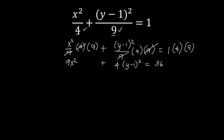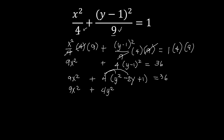Now expand the binomial squared using the special product. We have 9x squared plus 4 times the expansion of y minus 1 squared. Squaring the first term gives y squared. Multiplying the two terms: y times negative 1 is negative y, times 2 gives negative 2y. Squaring the last term: negative 1 squared is positive 1. So the expansion is y squared minus 2y plus 1, equal to 36.